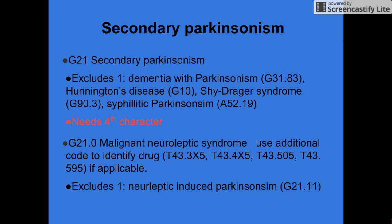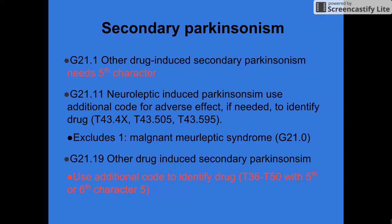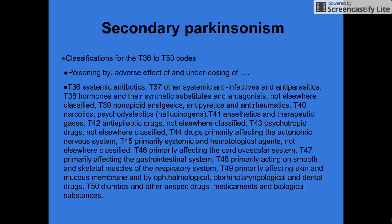G21.0 is malignant neuroleptic syndrome, and you use an additional code to identify the drug. It excludes neuroleptic-induced Parkinsonism. You would use an additional code to identify the drugs for neuroleptic and other drug-induced secondary Parkinsonism. Examples of the drug codes range from T36 to T50.